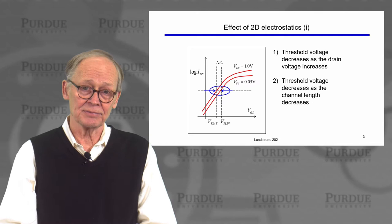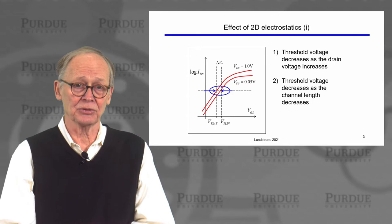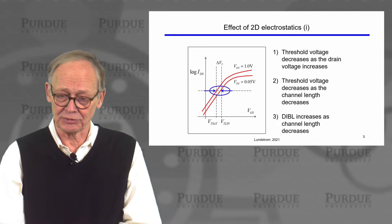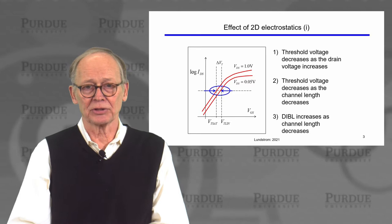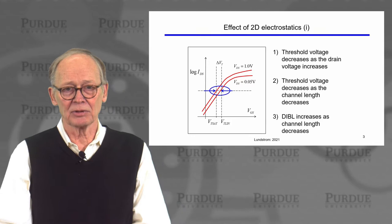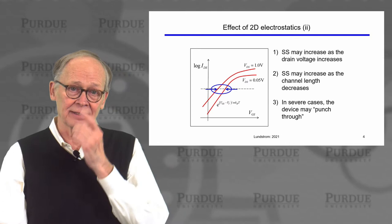At a fixed drain voltage, if you lower the gate length — shrink it — the threshold voltage can also decrease. That's an undesirable characteristic, to have different size transistors have different threshold voltages. The DIBL spread between the two curves also increases as the channel length decreases. These are undesirable effects that are due to two-dimensional electrostatics.